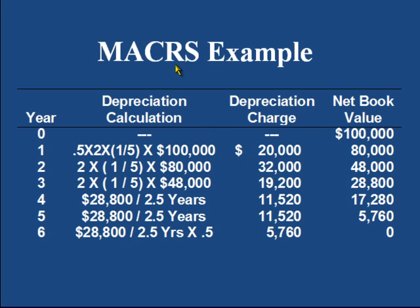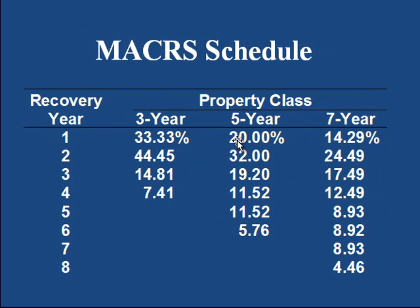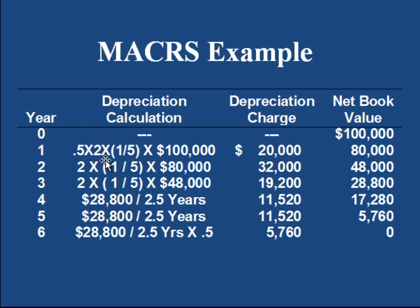Using this method, we calculate the first year depreciation equals to $20,000, which is 20%. Second year, we are making a depreciation of $32,000, which is 32%, and then 19.2%. These values represent the rates already seen in the table: 20%, 32%, 19.2%, 11.52%. When we use all the conventions of Modified Accelerated Cost Recovery System, we come up with the same percentages studied previously.